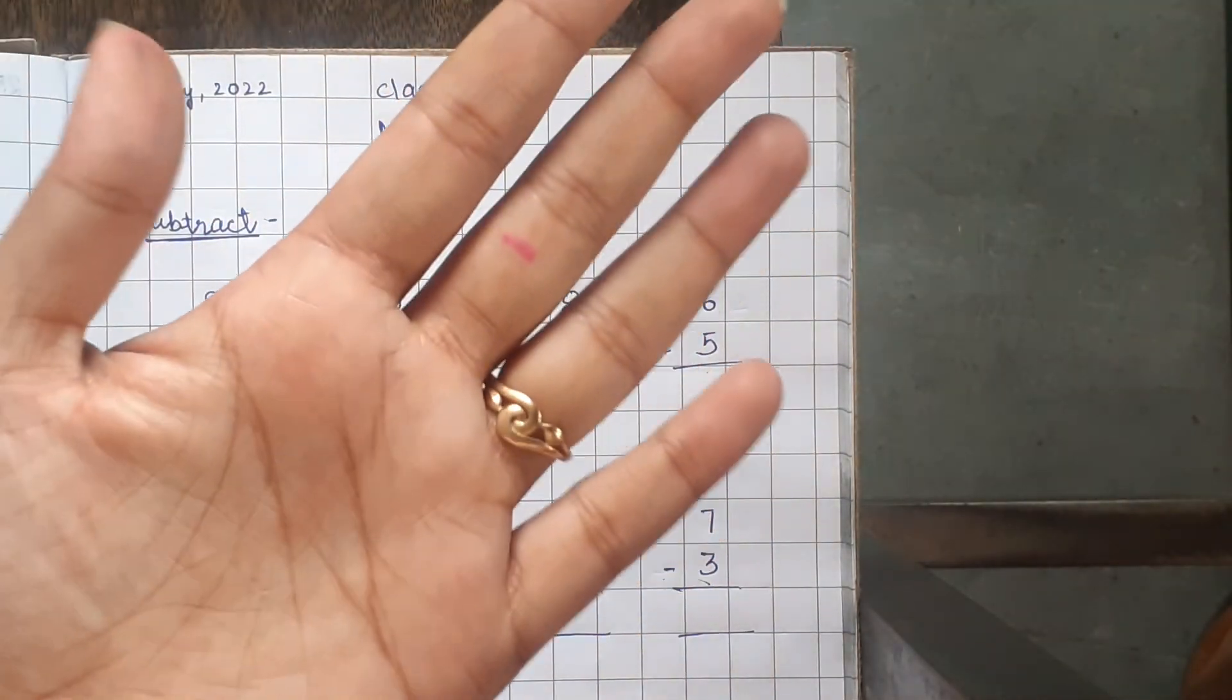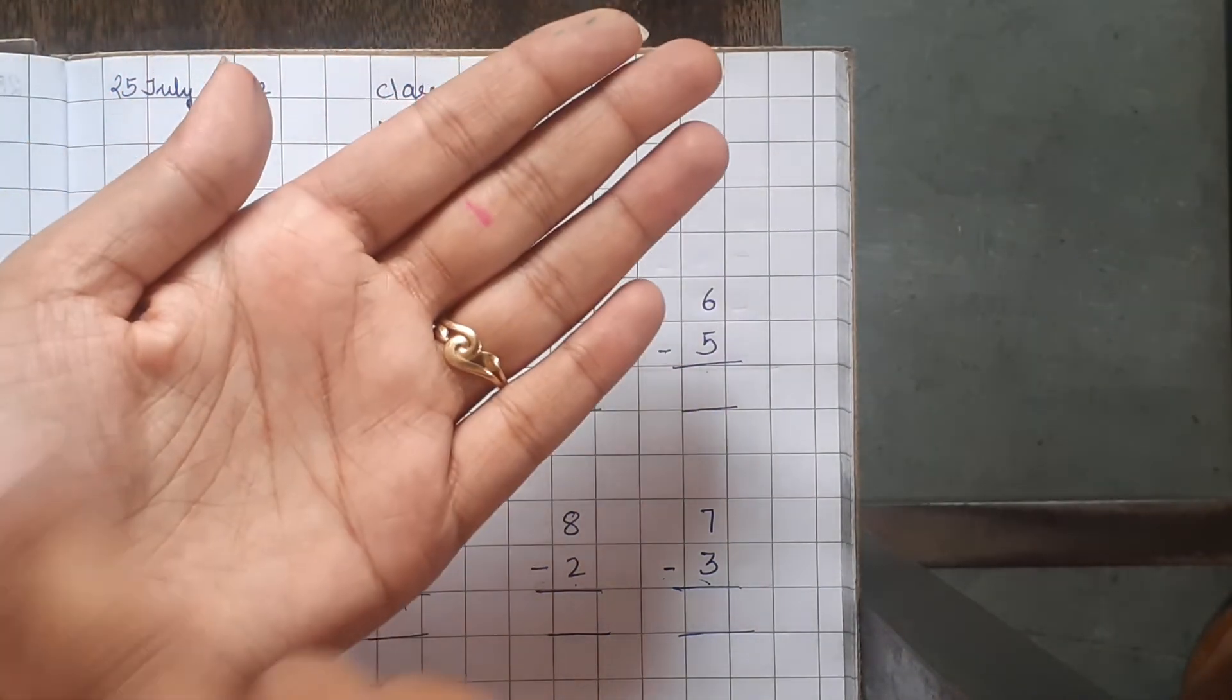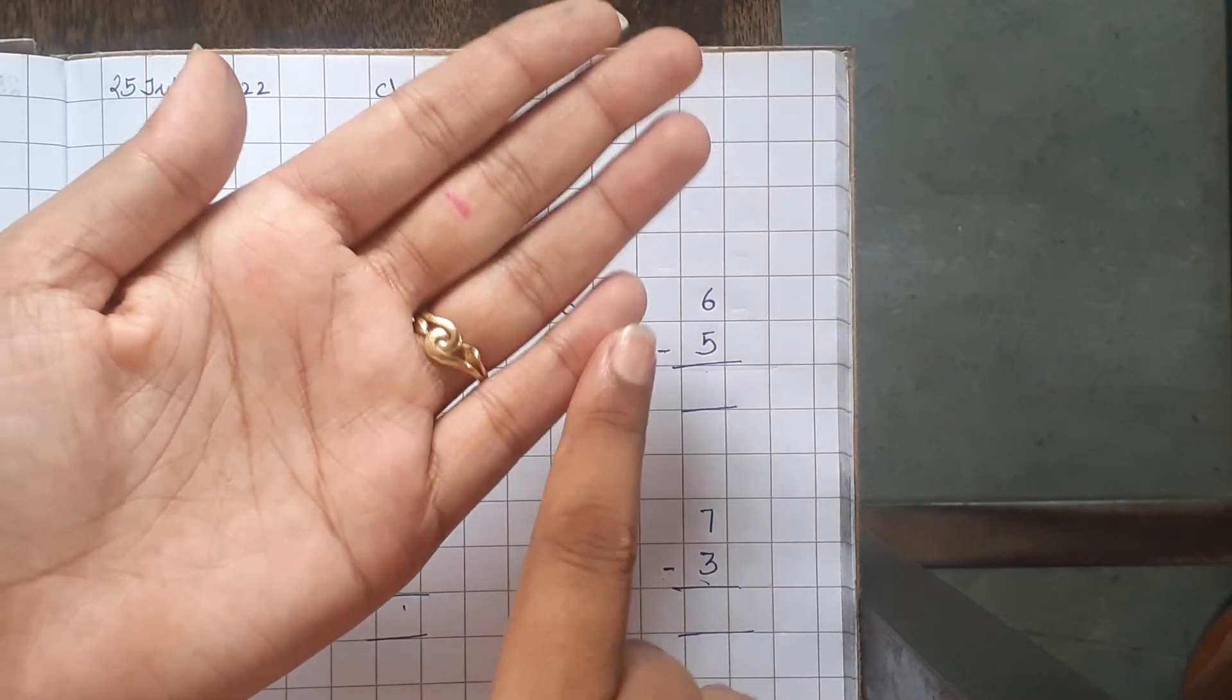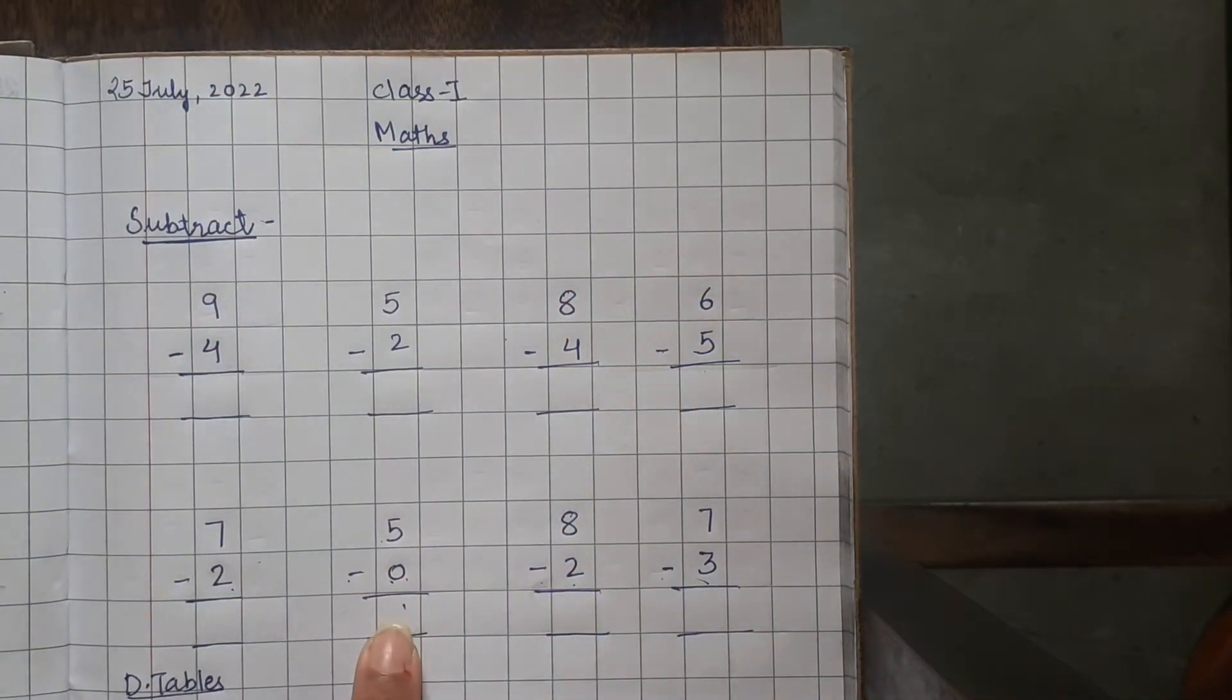Or, we can say, open your 5 fingers and close your 0 fingers, 0. It means we do not have to close any fingers: 1, 2, 3, 4, 5. 5 is the answer.